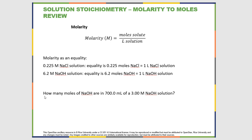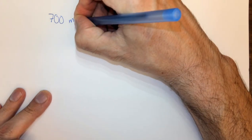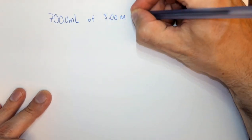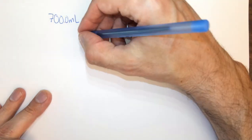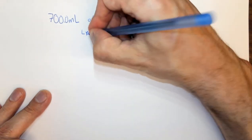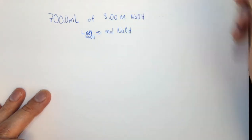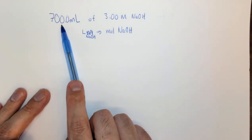Here is an example question: how many moles of NaOH are in 700 milliliters of a 3 molar NaOH solution? We have 700.0 mL of 3.00 molar NaOH and we want to know how many moles of NaOH there are. We're going to go from liters of NaOH solution to moles of NaOH. Remember, we don't use milliliters—we have to convert this to liters by dividing by 1000.